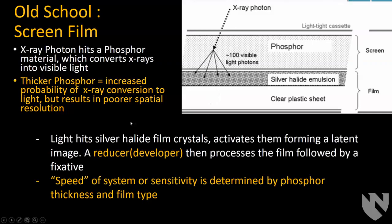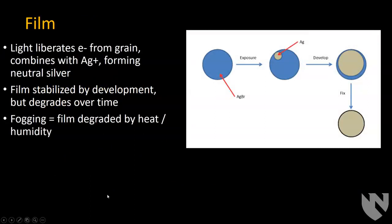The light hits a silver halide in the film, which releases an electron and causes silver to precipitate onto the film. When you develop it, the silver is fixed on the film. The speed of the system refers to how long you need to expose the film to get an image. Longer exposure means a slower film; shorter means a fast film. The trade-off is that faster films will typically have lower resolution. The film will stabilize when you develop it, but it degrades over time, becoming more foggy, especially when exposed to heat or humidity.